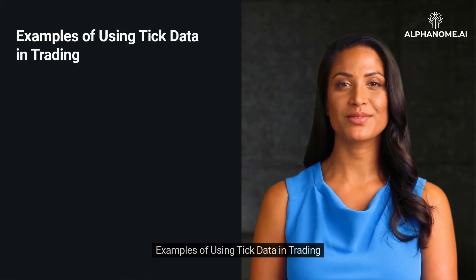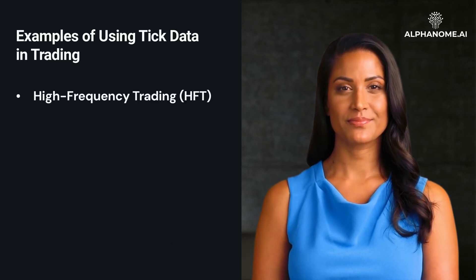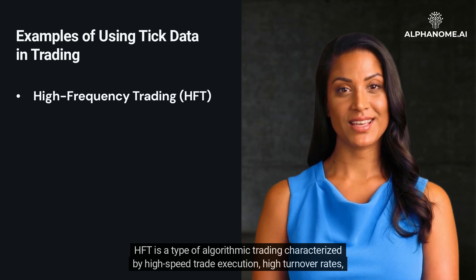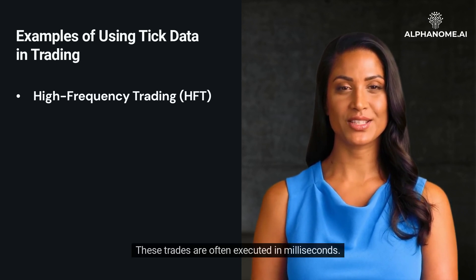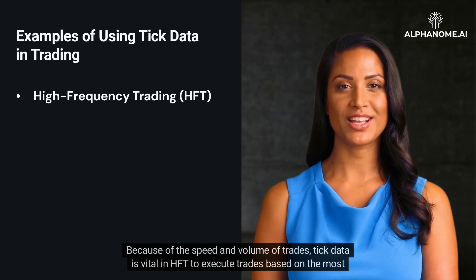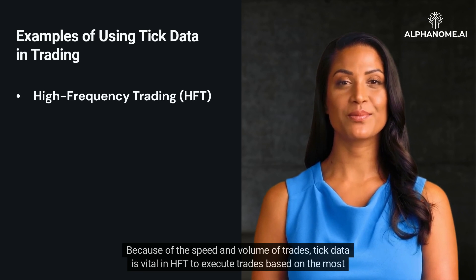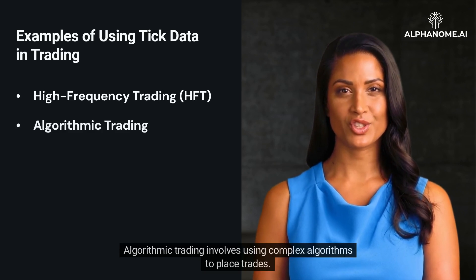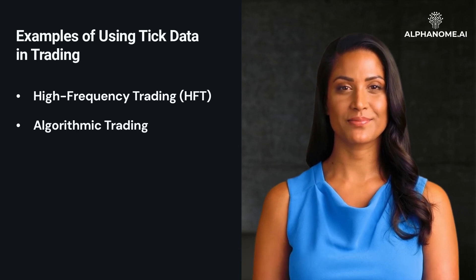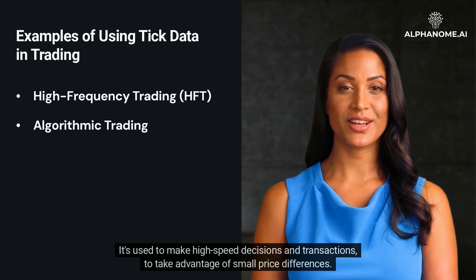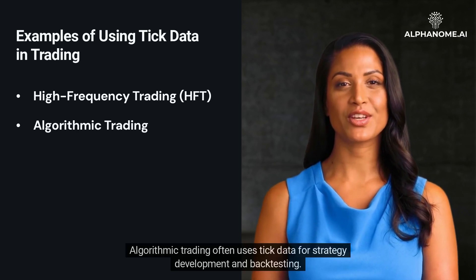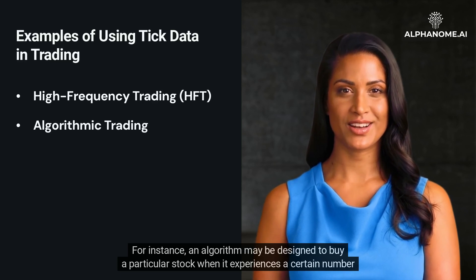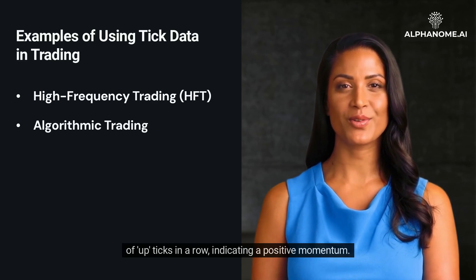Examples of using tick data in trading. High-frequency trading (HFT) is a type of algorithmic trading characterized by high-speed trade execution, high turnover rates, and high order-to-trade ratios. These trades are often executed in milliseconds. Because of the speed and volume of trades, tick data is vital in HFT to execute trades based on the most accurate and up-to-date information. Algorithmic trading involves using complex algorithms to place trades, making high-speed decisions to take advantage of small price differences. Algorithmic trading often uses tick data for strategy development and backtesting. For instance, an algorithm may be designed to buy a particular stock when it experiences a certain number of upticks in a row, indicating positive momentum.